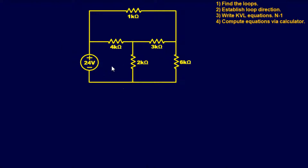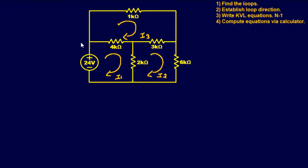For the next example we have something a bit more complicated, but we solve it with the same steps. Finding loops: I1 is loop one, I2 is loop two, I3 is loop three, and I4 goes around the outside — that's loop four. I choose clockwise direction. With four loops, N minus one gives us three equations required.